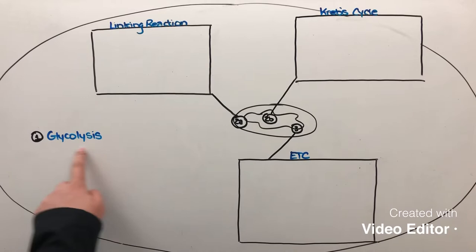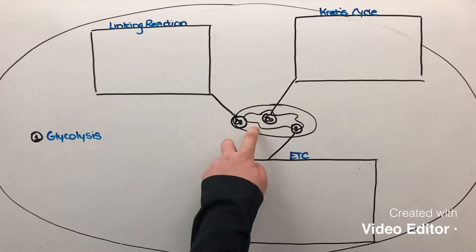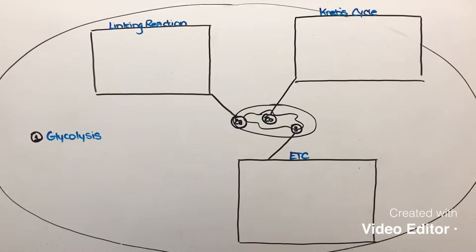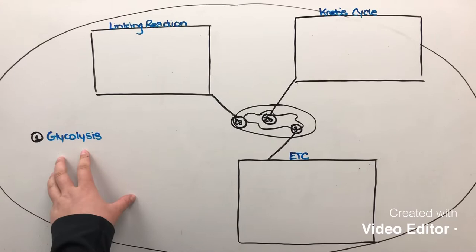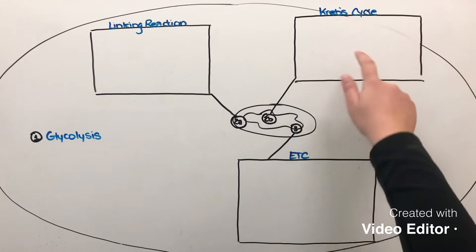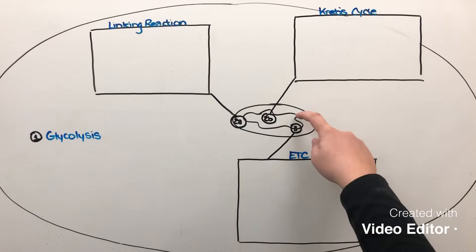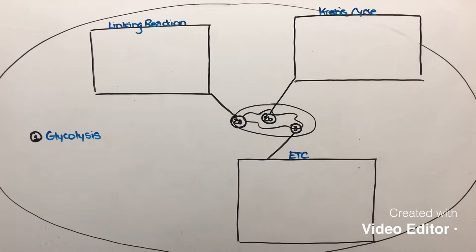We start with glycolysis, which is the first step of cell respiration and it takes place entirely in the cytoplasm of the cell. The products of glycolysis then move into the intermembrane space of the mitochondria, where the linking reaction occurs. The linking reaction transforms those products into a molecule that can enter the matrix of the mitochondria, where the Krebs cycle takes place. The Krebs cycle produces molecules which fuel the electron transport chain, which takes place across the inner mitochondrial membrane and eventually produces a bunch of ATP.